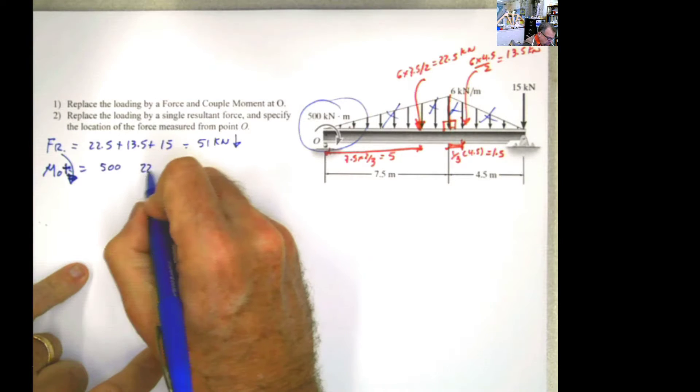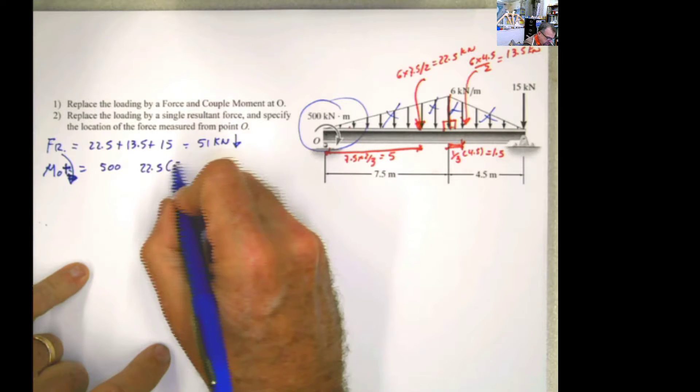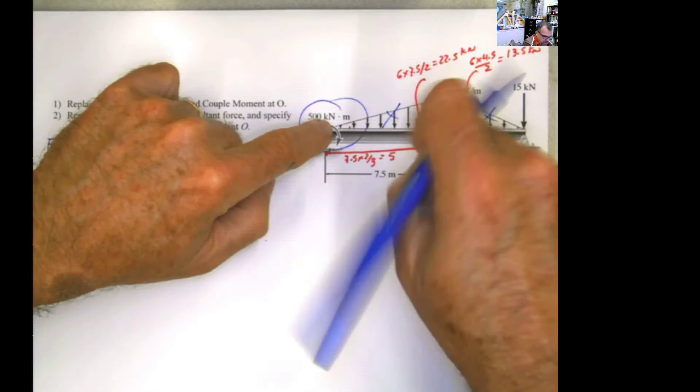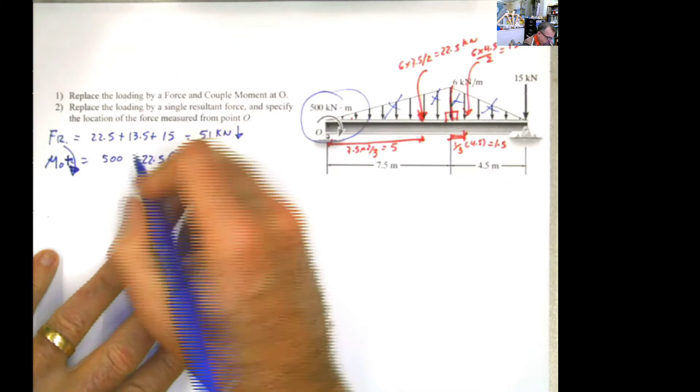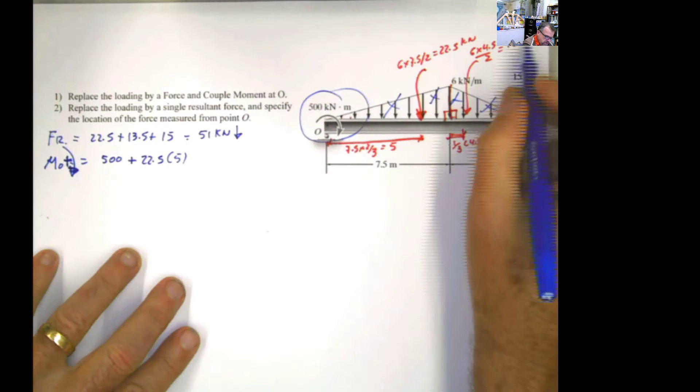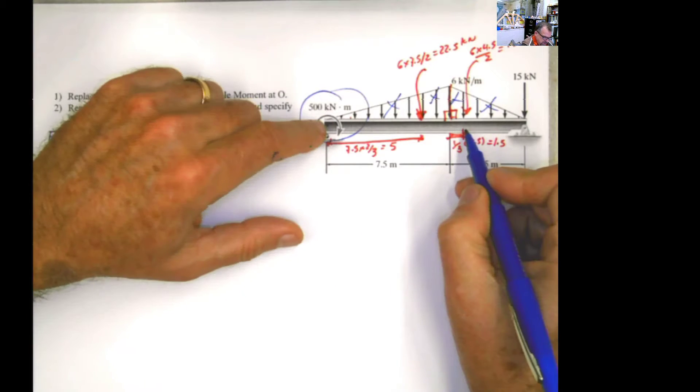Now we continue with the forces. 22.5 multiplied by the distance. Vertical force, horizontal distance, 5. The rotation, applying the force this direction, according to my convention here, is positive.